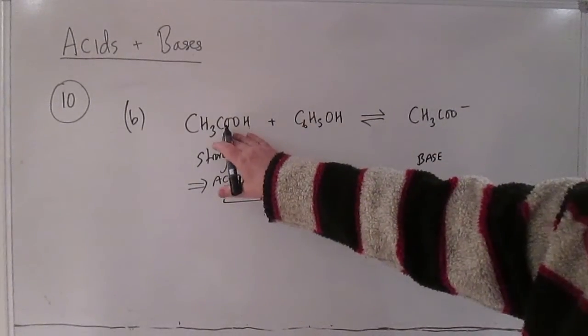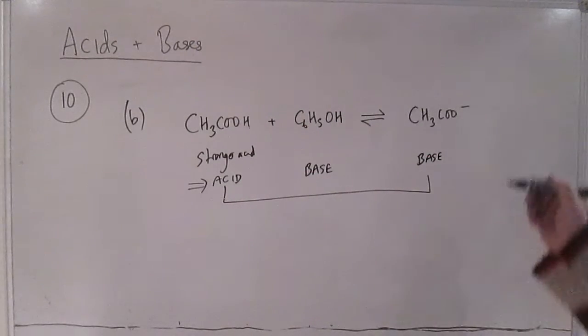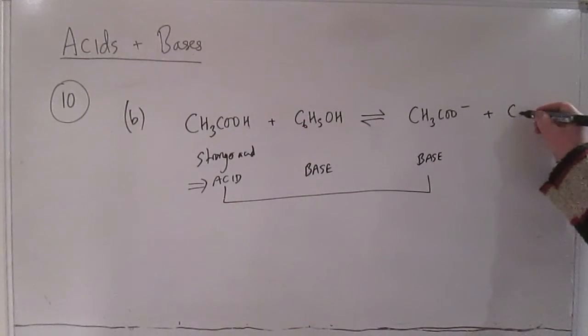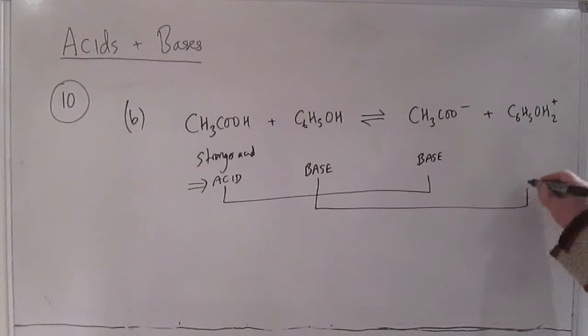And the proton that's donated by the ethanoic acid will get picked up by the phenol so we'll get this rather unfamiliar looking thing C6H5OH2 plus and that is the conjugate acid of phenol.